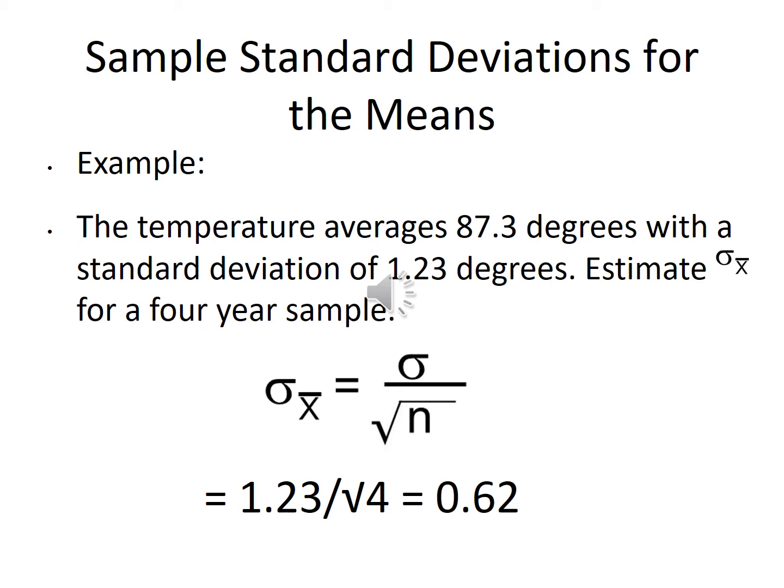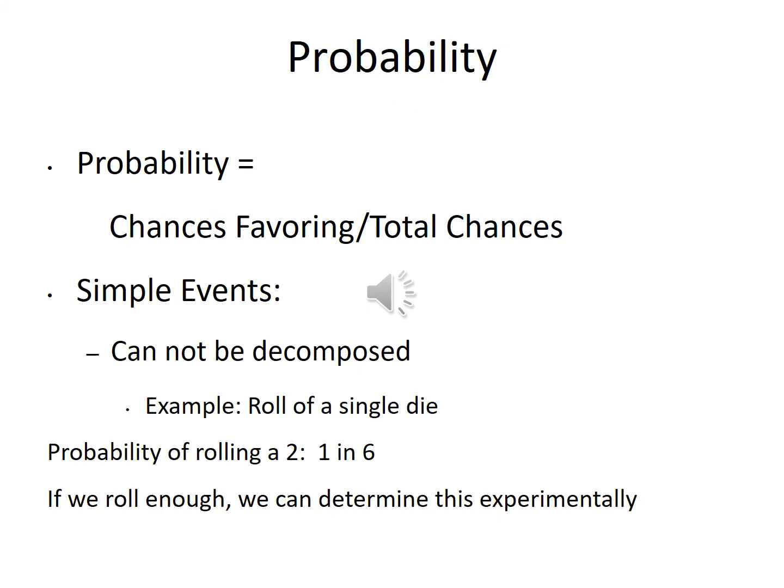Now let's talk about probability. For the rest of Six Sigma we're going to calculate what's called a p-value. The p-value represents the probability that the variation we've seen is just caused by random chance — how much things vary purely by chance versus something actually happening.